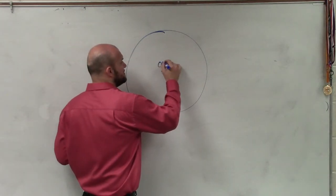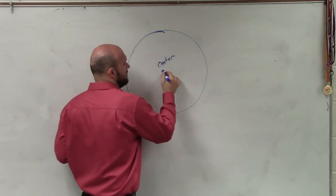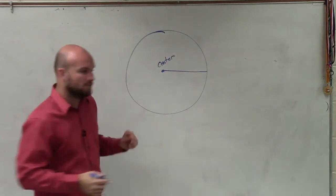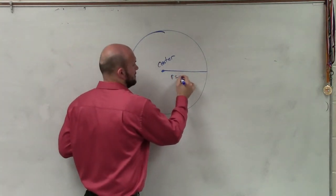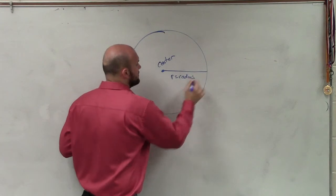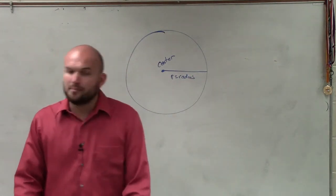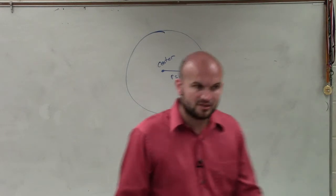Now, the distance from the center from any one of those points to the outside is what we call the radius. And we're going to use most often the variable r to represent the radius.